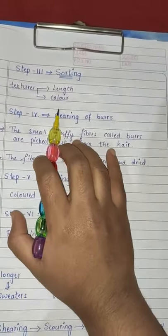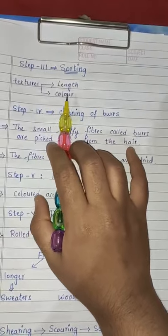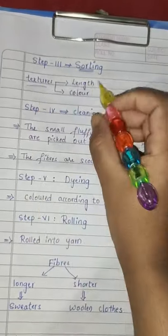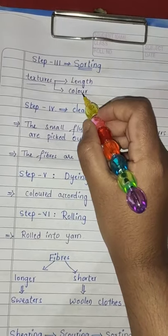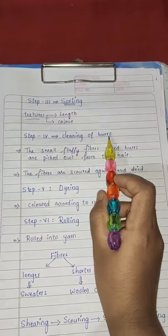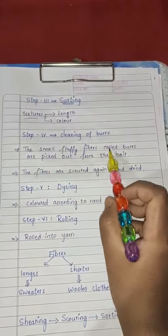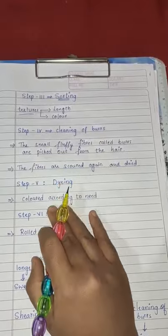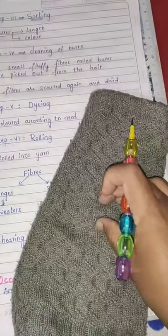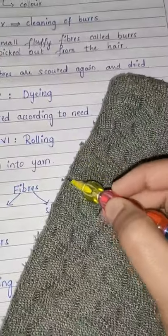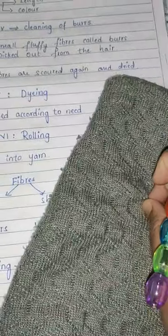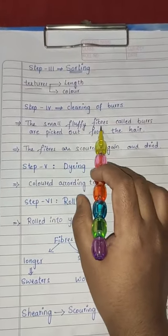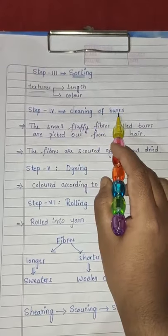Step three is sorting: the wool is sent to factories to be sorted, meaning it is separated based on different textures such as length and color. Step four is cleaning of burrs: the small fluffy fibers called burrs are picked out from the hair. These are the same burrs which sometimes appear on your sweater. This process of picking out those small fluffy fibers is called cleaning of burrs.